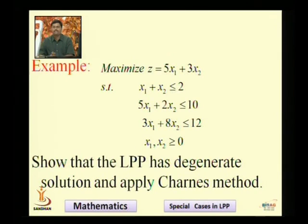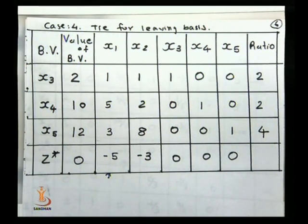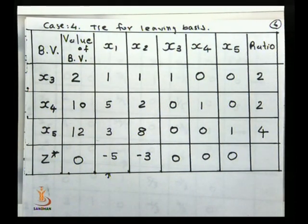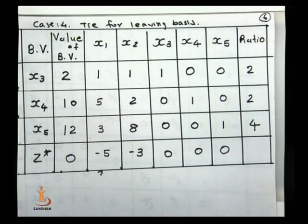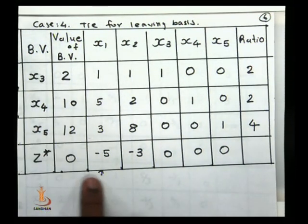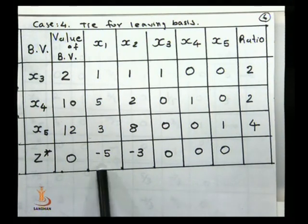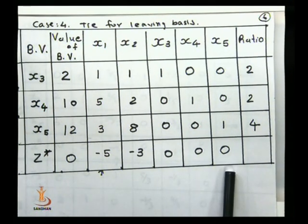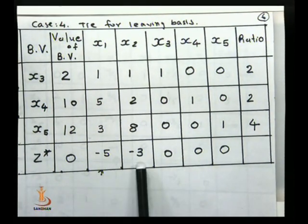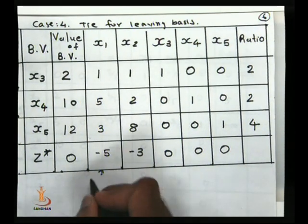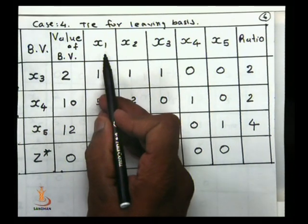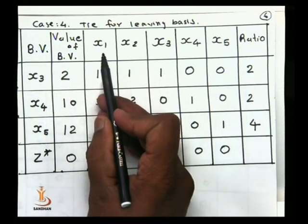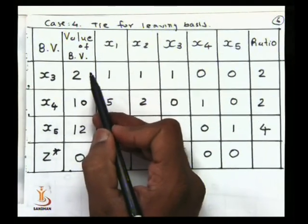After converting, the simplex table is formed. You can see the values of the cost coefficients - there are negative values, minus 5 and minus 3. This minus 5 is the most negative, which means the corresponding variable x1 will enter into the basis. The entering variable has been determined.